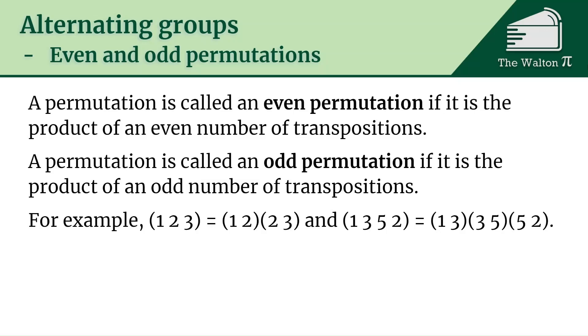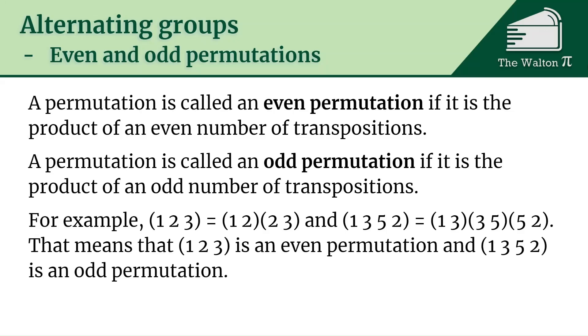For example, (1 2 3) is an even permutation and (1 3 5 2) is an odd permutation. Because (1 2 3) is (1 2) times (2 3), that's two transpositions, and (1 3 5 2), that's three transpositions. The identity permutation is even, that's just the product of no transpositions. Zero is even, that's why we get that.